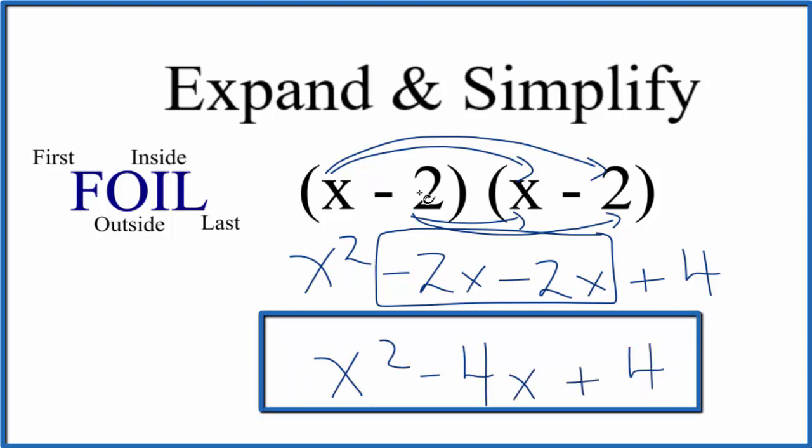So when we expand and simplify x minus 2 times x minus 2, we get x squared minus 4x plus 4.